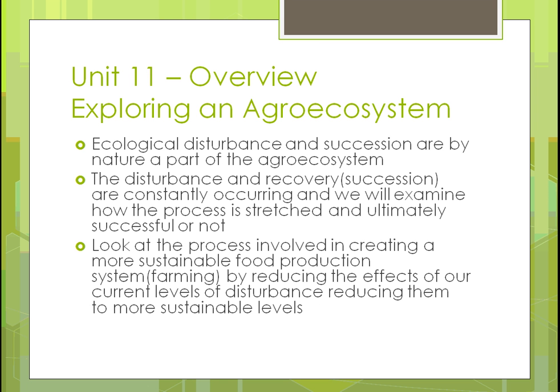The ecological disturbances and successions we covered in Unit 9 will come up again here. A disturbance is when we go in and, say, till the land. Succession is when the ecosystem — nature — tries to recover back to what it should be. We'll look at disturbance and recovery, how to evaluate whether it's working for us, and ultimately what processes are involved in creating a more sustainable farming system by reducing disturbance effects — in other words, what we can do to interfere with the ecosystem less so it functions naturally.